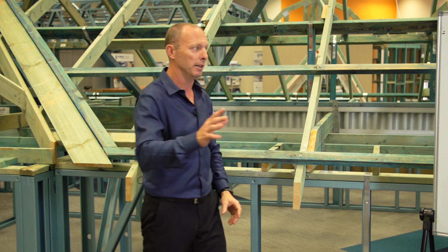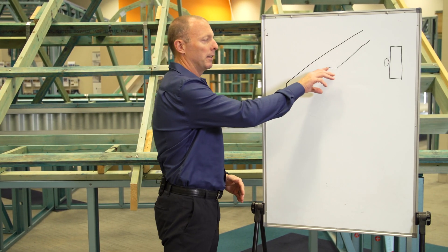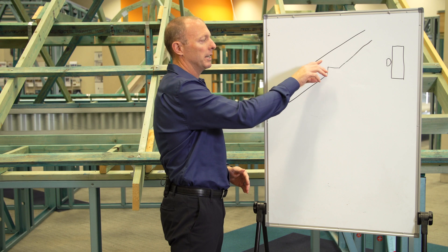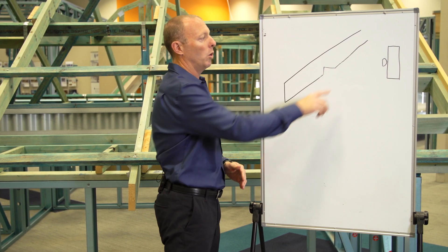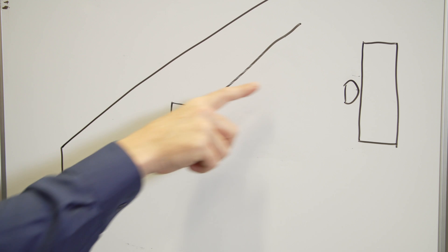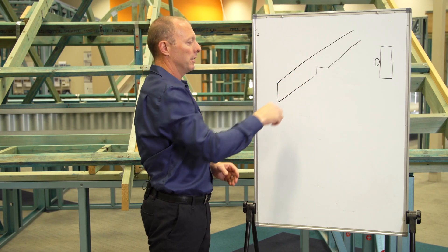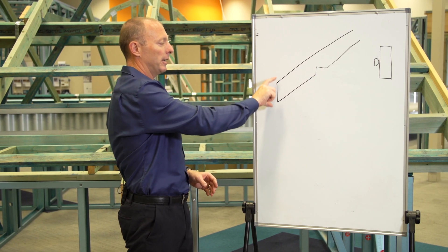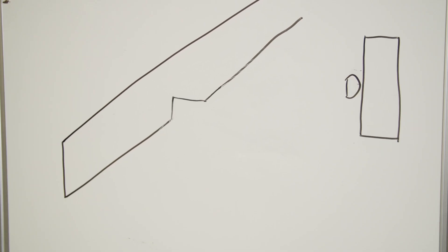The other thing you need to look at with your rafters is your bird's mouth. This bird's mouth cannot exceed one third of the depth of the rafter, or D/3. If that bird's mouth exceeds that dimension, what you can get is excessive deflection of the rafter tail, or even worse, failure.